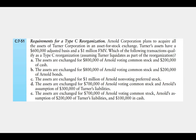In Problem 51, Arnold Corporation plans to acquire all the assets of Turner Corporation in an asset-for-stock transaction. Turner's assets have a $600,000 adjusted basis and a $1,000,000 fair market value. Which of these transactions qualify as a Type C, assuming Turner liquidates? In (a), the assets are exchanged for $800,000 of Arnold voting common stock and $200,000 of cash. This qualifies because all the assets are transferred and voting stock makes up 80% of the transaction.